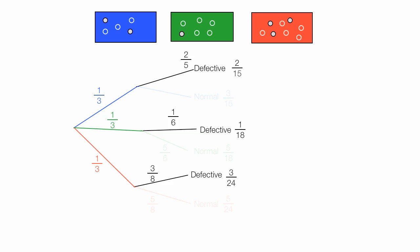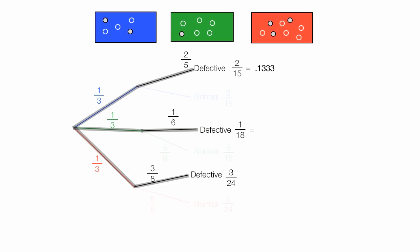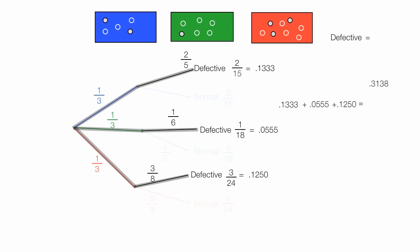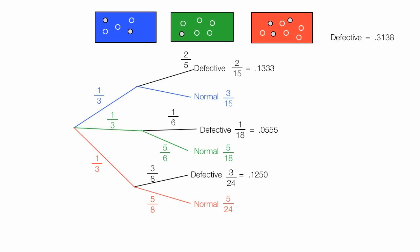To calculate the probability of picking a defective part from the very beginning — picking a box and picking a defective part — I add up all the different probabilities. Converting to decimals: two over fifteen equals 0.133, one over eighteen equals 0.0555, and three over 24 equals 0.1250. Adding these together gives 0.3138. So the chances of getting a defective part is about 31.38%.